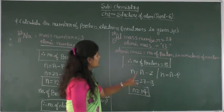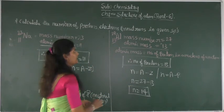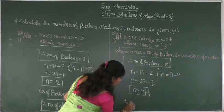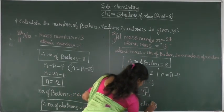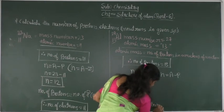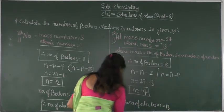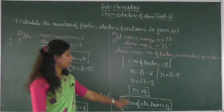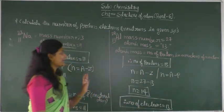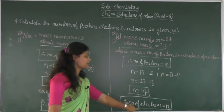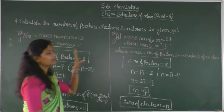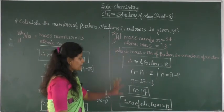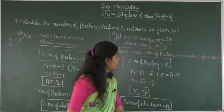Next we find the total number of electrons in aluminium. Since aluminium is a neutral species, the number of protons equals the number of electrons. Therefore, the number of electrons is 13. In a neutral atom, number of protons are always equal to number of electrons.